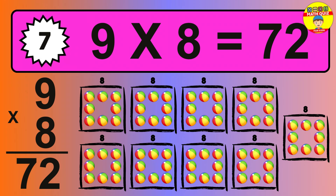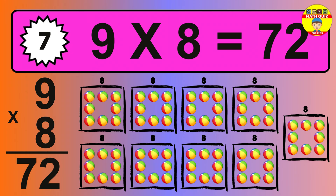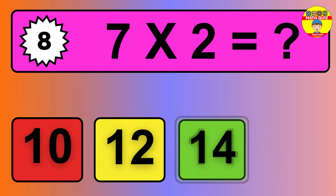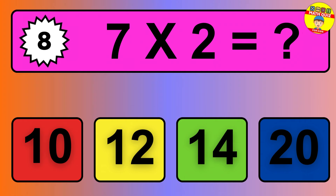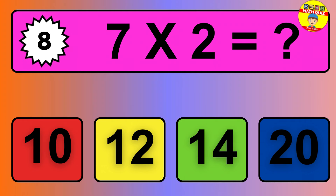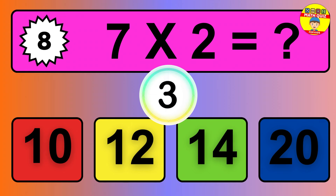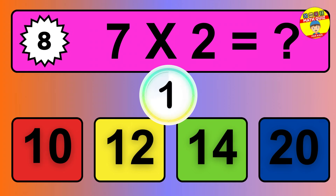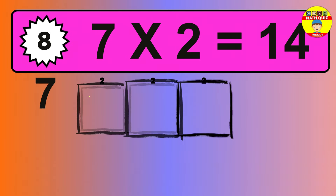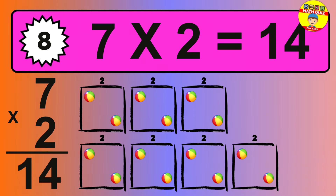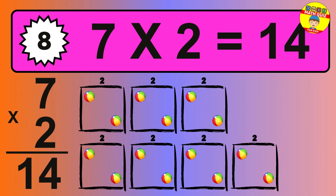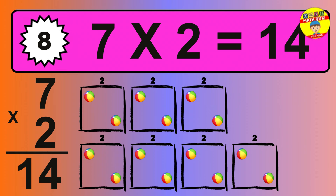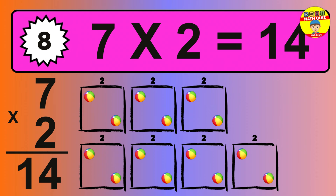72 balls. Question 8. 7 times 2 equals what? The answer is 7 times 2 is 14. To calculate, we have 7 groups with 2 balls each one. So how many balls do we have? 14 balls.